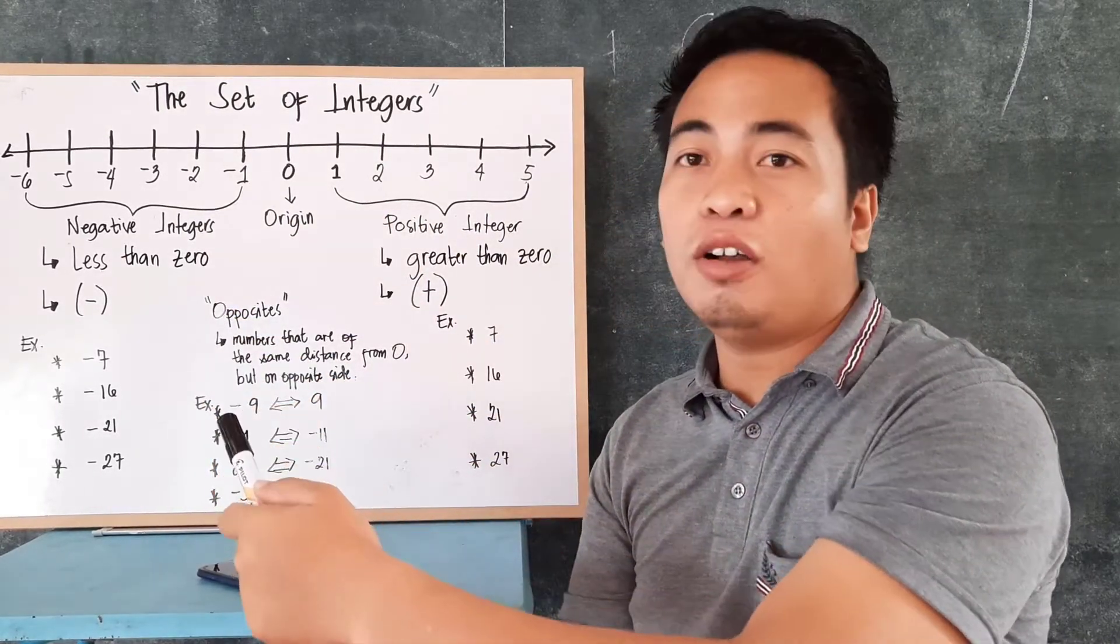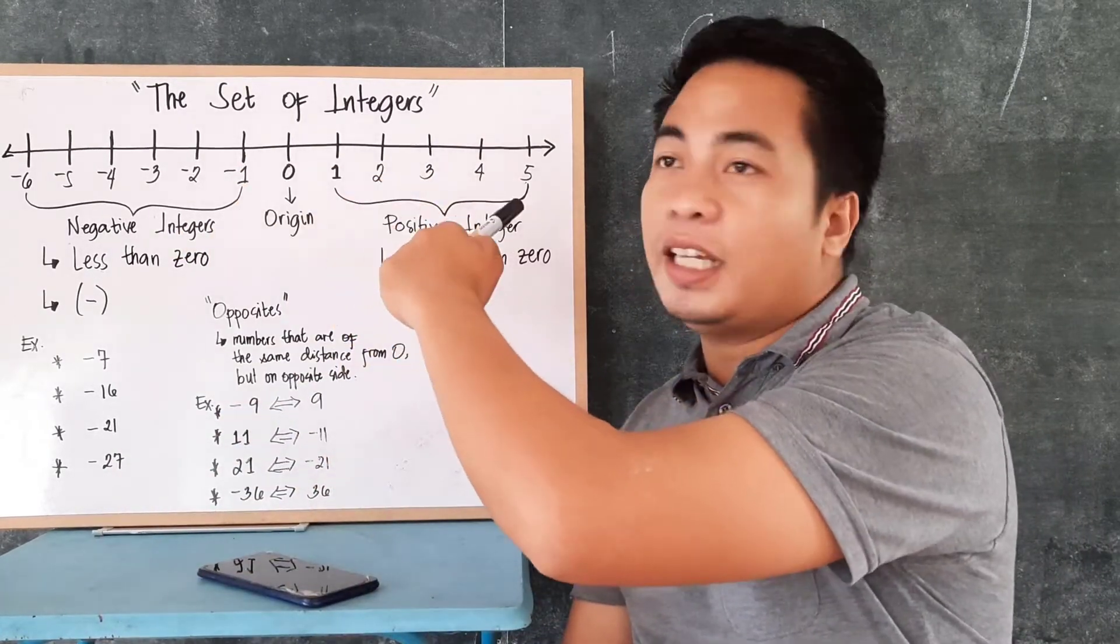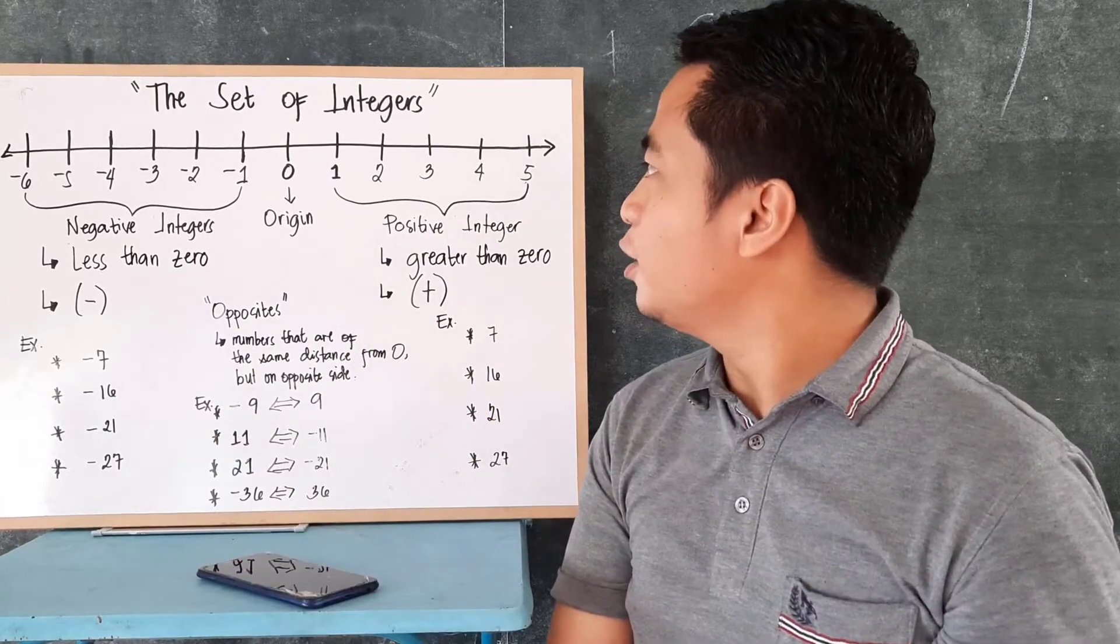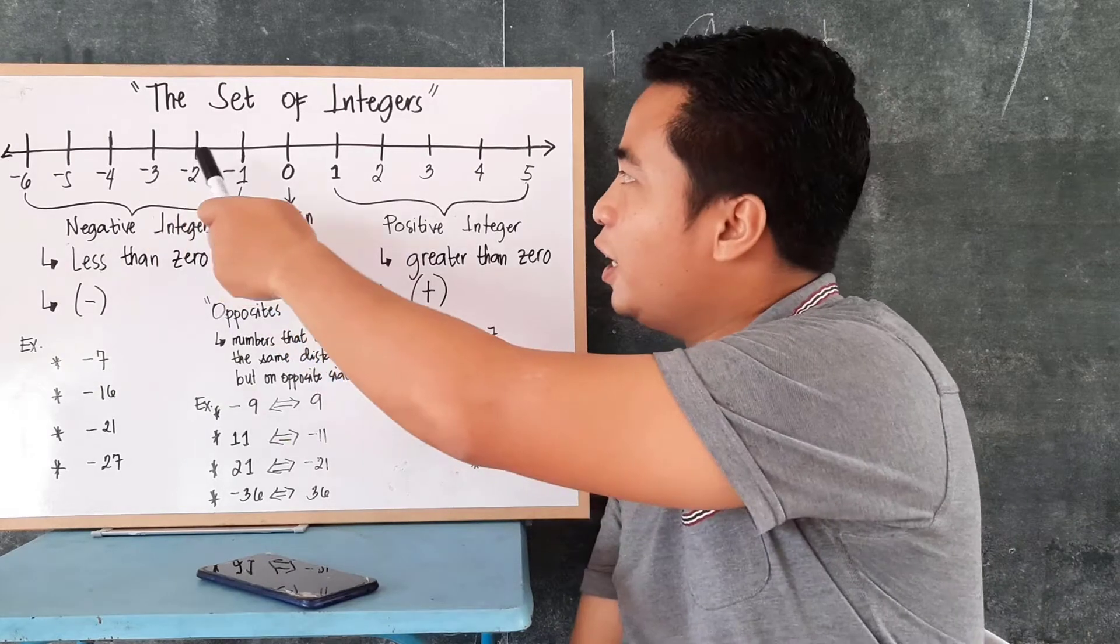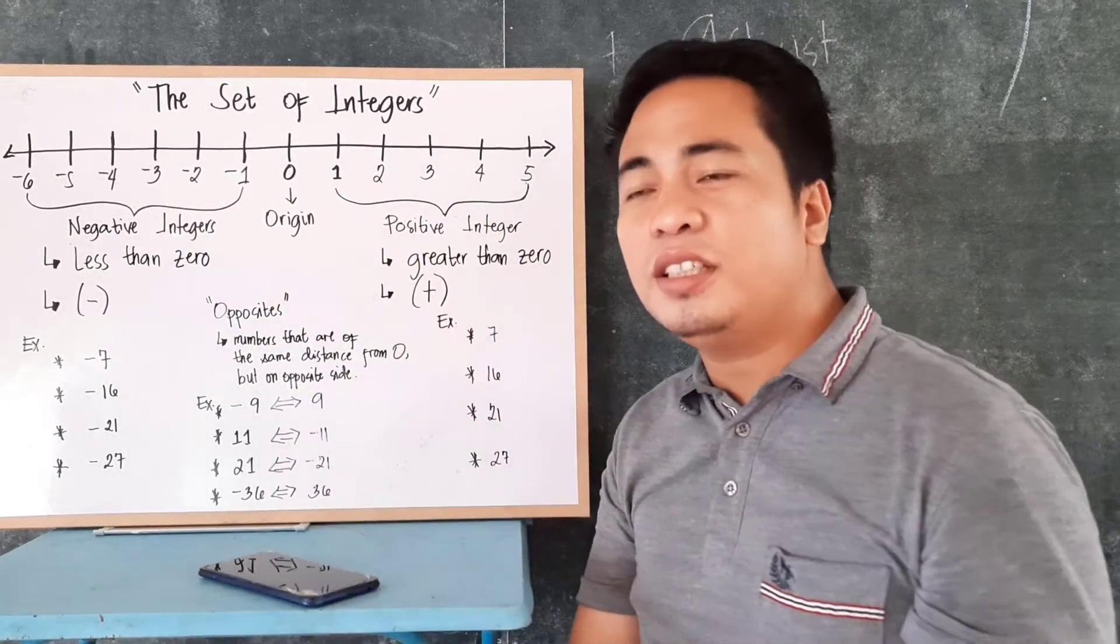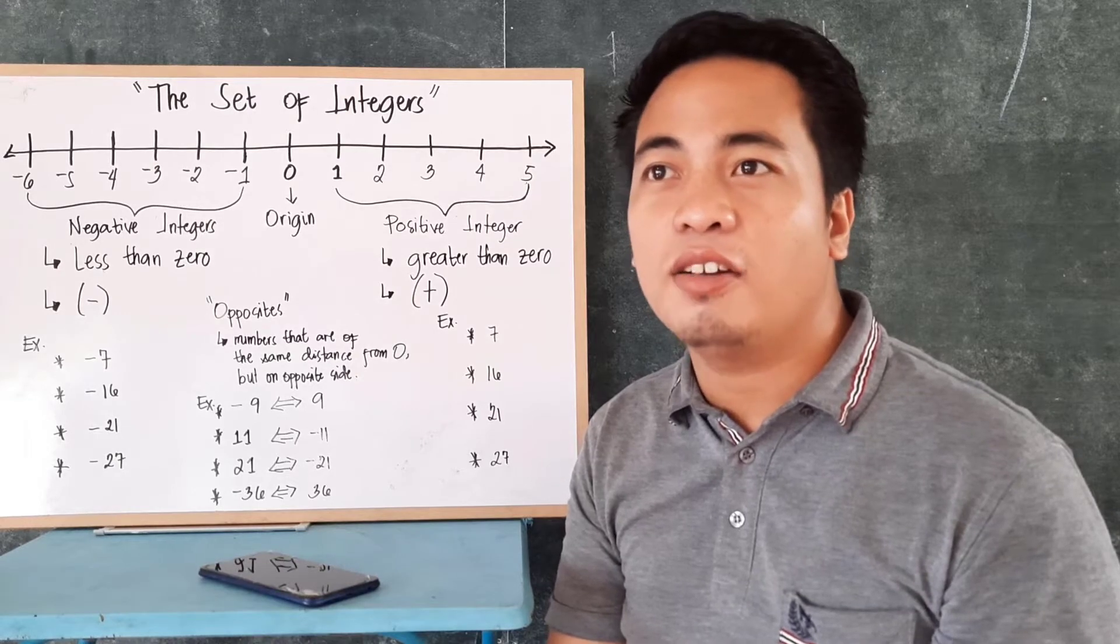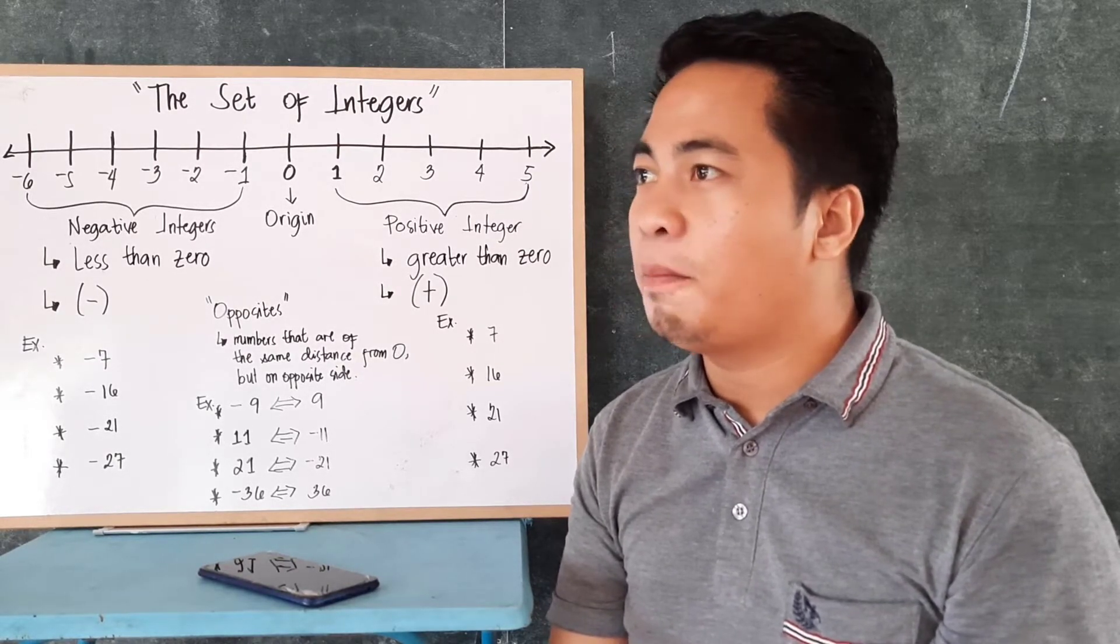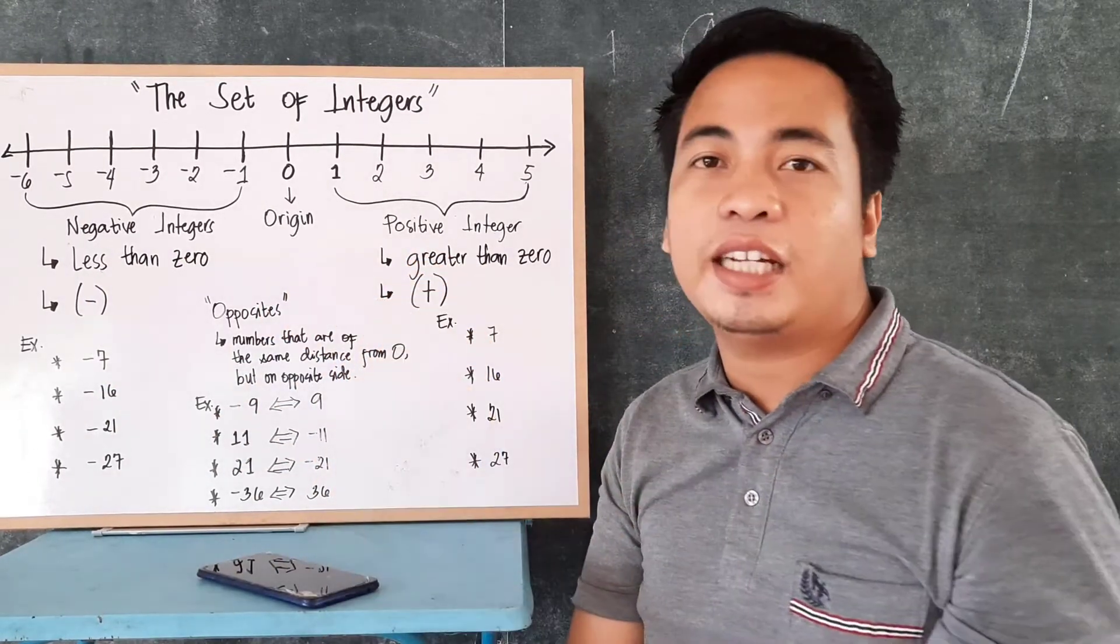As we all know in the previous video, integers are just a subset of all real numbers. Now, just a quick history about the number line system. This was discovered by Napier around 1600, and John Wallis used this in his algebra around 1700.